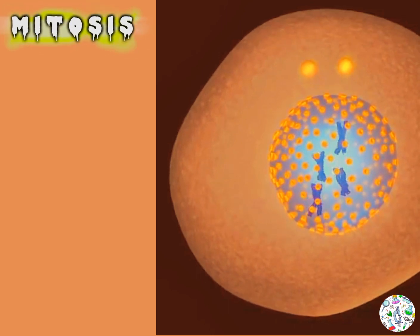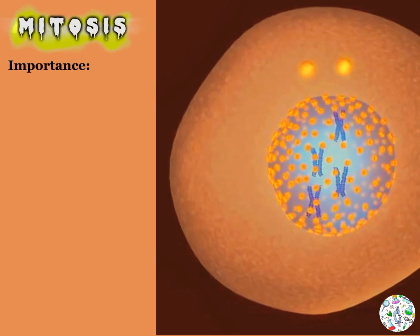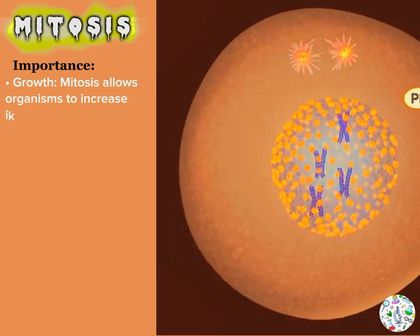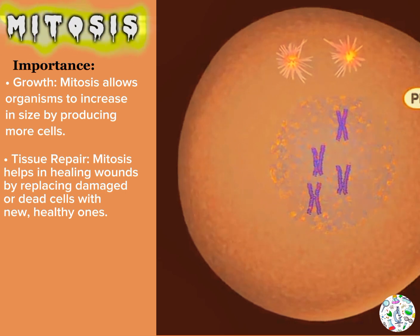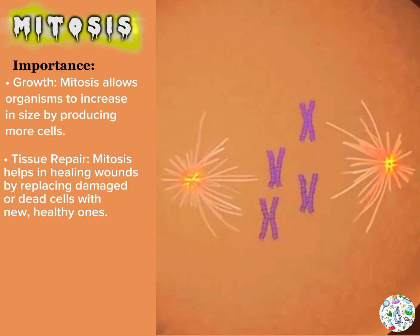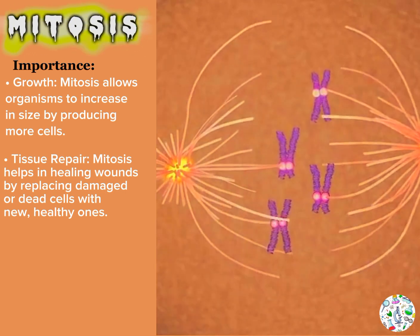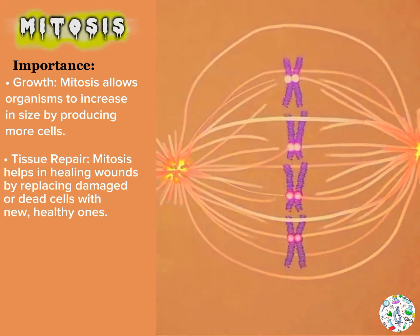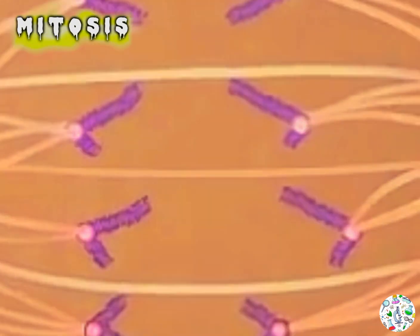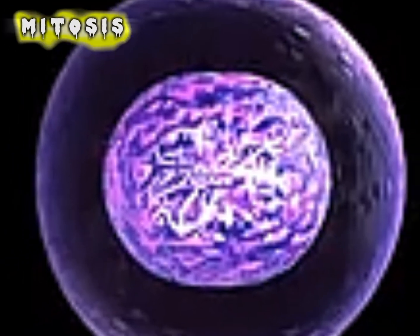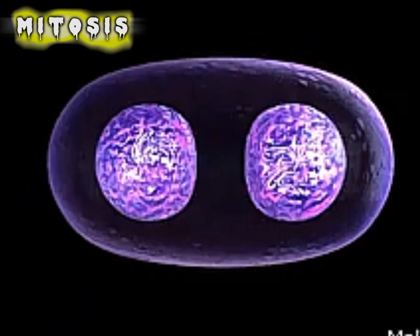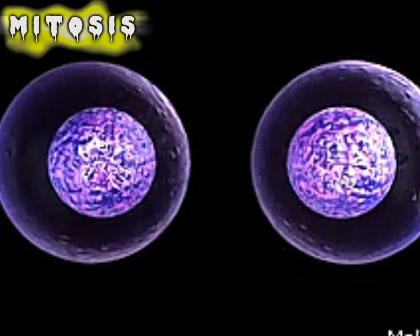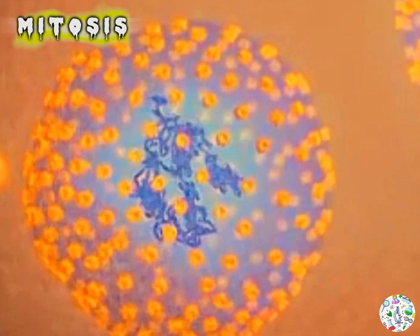Two interesting things about mitosis: number one, mitosis is very important to organisms because it is required for the growth of an organism and to repair any damaged tissues. Number two, the time taken for mitosis to take place differs from one organism to another — in certain organisms cells can take just a matter of minutes to complete mitosis, while in other organisms it can even take hours.